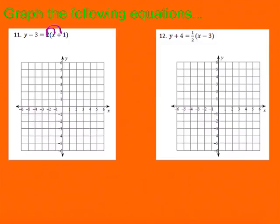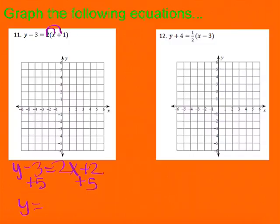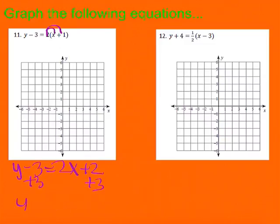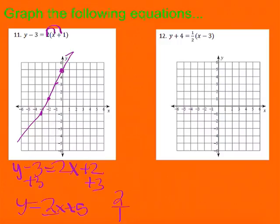First thing we're going to do is get this to slope-intercept form. Starting by distributing, I get Y minus 3 equals 2X plus 2. Then I add 3 to both sides and get Y equals 2X plus 5. So we're crossing the Y axis at 5 and my slope is 2, which is the same as 2 over 1. I can't go up 2 over 1 because I'll be off the graph, so I'm actually going to go down 2 and left 1 repeatedly, then connect those dots. That gives me my answer for number 11.